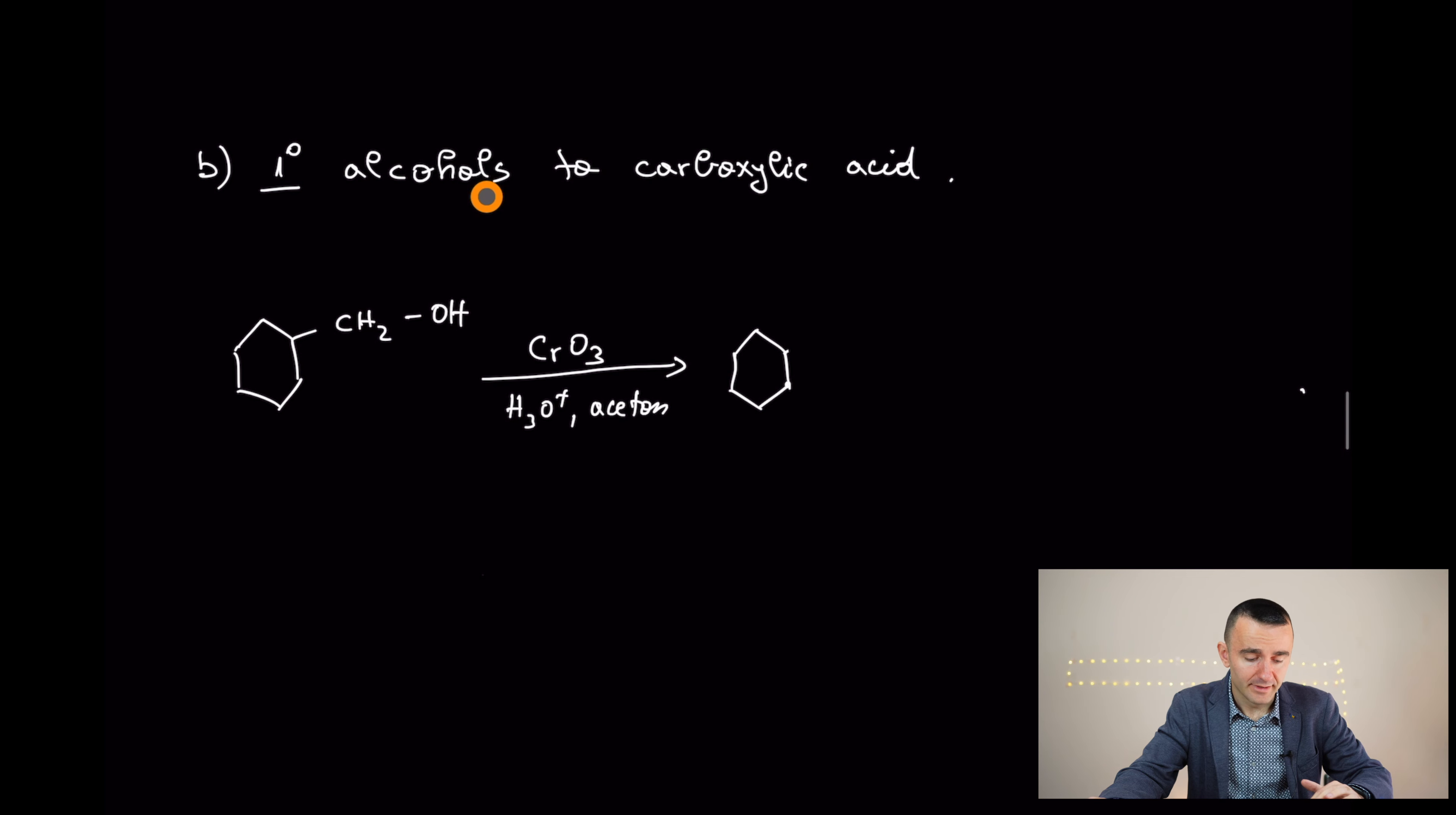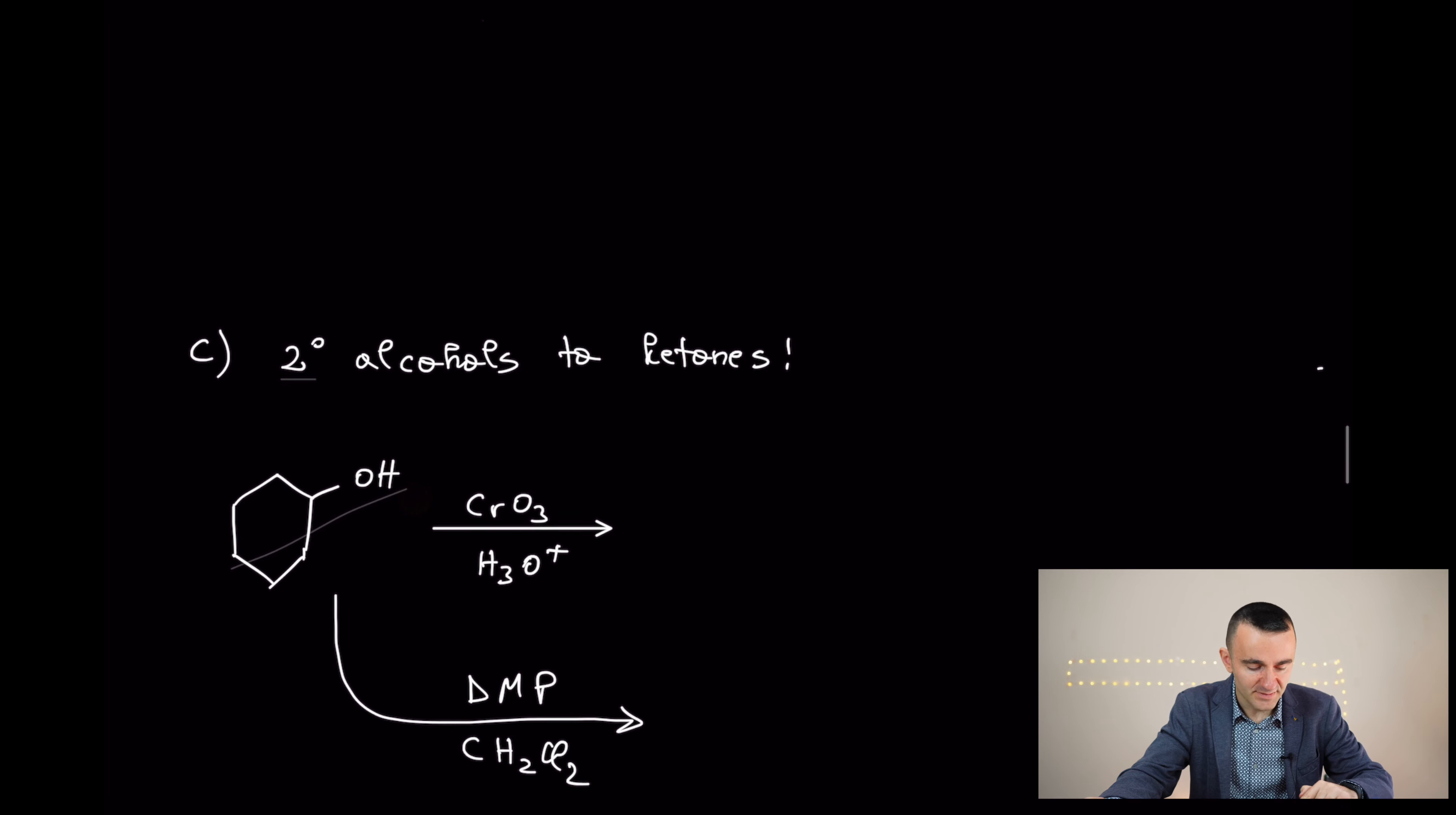Okay. What about if you want to convert primary alcohols into carboxylic acids? You're going to need to use a strong oxidizing agent and the best for those ones are those chromates. Right? Depends what the exercise you want to do. Okay.